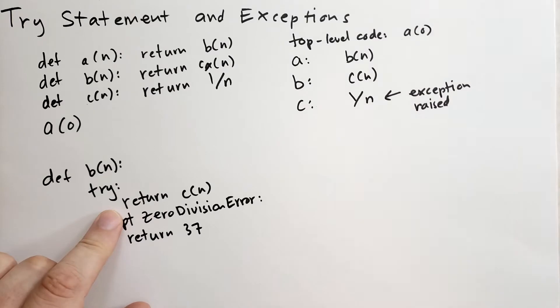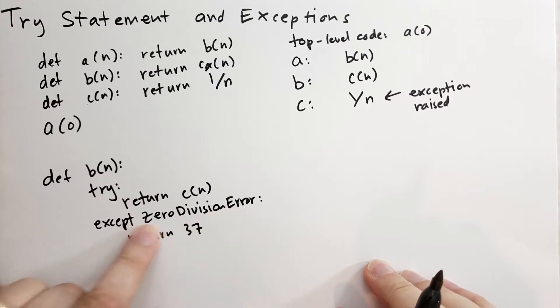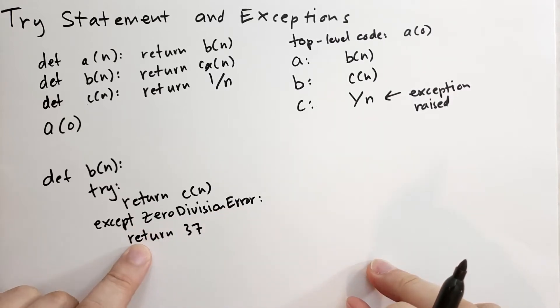What this code means is that we're going to try to run the code inside the try block. If an exception is raised, then we're going to try to handle it, but only if it's a zero division error. And when we handle it, we're going to substitute new behavior instead of that.